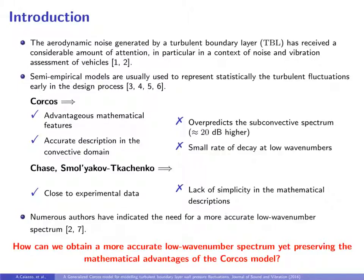Many semi-empirical models of TBL based on fits to experimental data have been developed since the 50s. Among others, the Corcos model has received large attention due to its advantageous mathematical features and its accurate description of the wave number frequency spectrum of the wall pressure in the convective domain. However, a major drawback is the small rate of decay for wave numbers below the coincidence frequency, where it tends to over-predict the spectrum by about 20 dB.